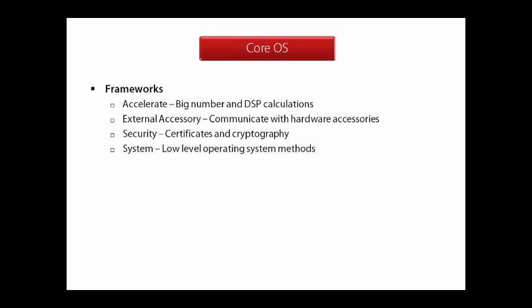Moving on to Core OS, there aren't as many frameworks here. You have the Accelerate framework, which is basically big number and digital signal processing calculations — if you need it, you'll know what it is. There's a layer that lets you communicate with external accessories through the iPod dock, which is quite interesting. You have your basic security layer here — cryptography, public key, private key, and handling certificates. And then the low-level operating system methods — this is where you get into the roots of Mac OS X, the Unix/BSD type of stuff.